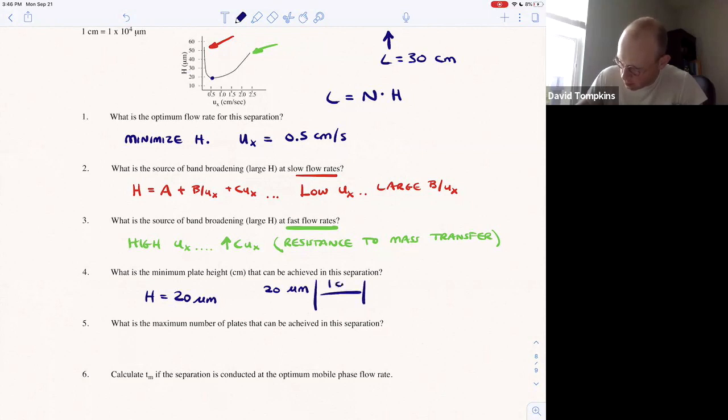Okay, and in one centimeter there are 10 to the 4 micrometers, or here we're going to get 2 times 10 to the negative 3 centimeters for the plate height.